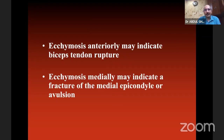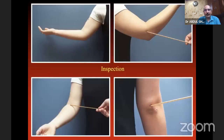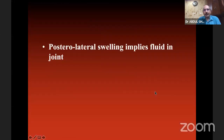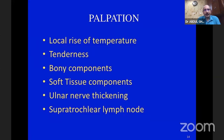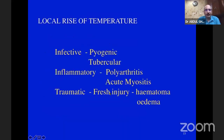Posteromedial swelling implies generally fluid or arthritis in the joint — can be septic or other arthritis. The second step is palpation. Start with local rise of temperature — always start with the normal side and compare to the opposite side. Then feel for tenderness, bony component, soft tissue component, ulnar nerve thickness, and supratrochlear lymph node. Tick all these boxes to complete your palpation.